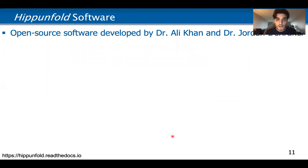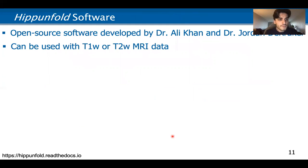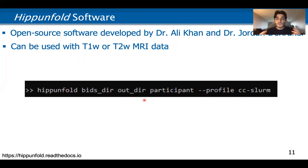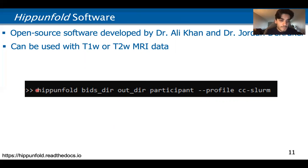HipUnfold is an open source software developed by Dr. Ali Khan and Dr. Jordan DeKraker, and it can be used with T1-weighted or T2-weighted MRI data. If you want to know more about the process, I highly recommend going to hipunfold.readthedocs.io where there's more information. Here I'm showing you the actual command to run HipUnfold. Once you have everything installed, it's one command at the command line — very simple to run.